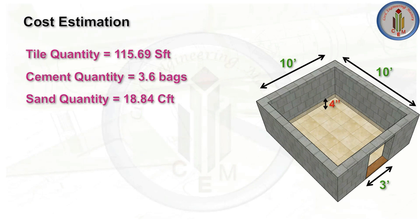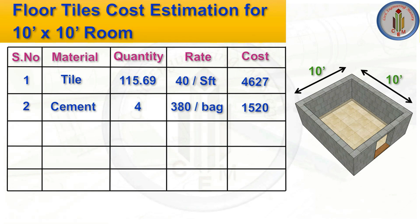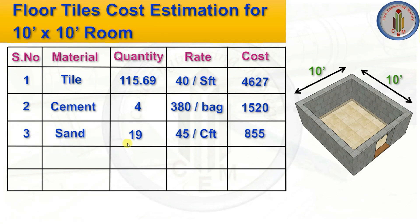Now for the cost estimation. Tiles: 115.69 sq ft × 40 rupees/sq ft = 4,627 rupees (rate may vary by tile choice). Cement: 4 bags × 380 rupees/bag = 1,520 rupees (price may vary by location). Sand: 19 cft × 45 rupees/cft = 855 rupees.